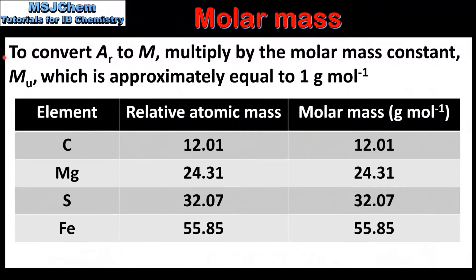To convert from relative atomic mass to molar mass, multiply by the molar mass constant, which is approximately equal to 1 gram per mole.